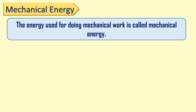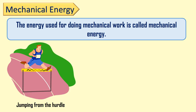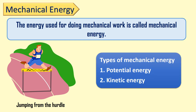The first form of energy is mechanical energy. The energy used for doing mechanical work is called mechanical energy. For example, jumping from a hurdle while running is an example of mechanical energy. Mechanical energy is of two types: potential energy and kinetic energy. Let's see one by one what is potential energy and kinetic energy.